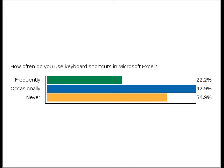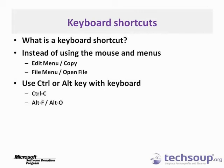A lot of you use shortcuts already, so maybe you're here to hear about pivot tables. The basic idea of keyboard shortcuts is that instead of using the mouse and menus — mousing over to the Edit menu, clicking Edit, mousing down to Copy, and clicking Copy — you just use a shortcut like holding down Ctrl and pressing C. That is the copy shortcut.